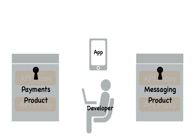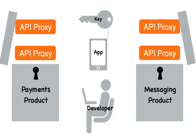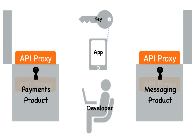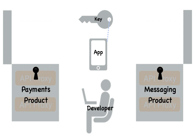Creating the app provides the developer with an API key that they put into their code that unlocks access to the resources in your API product. At this point, your API is ready to go out to your developer community.